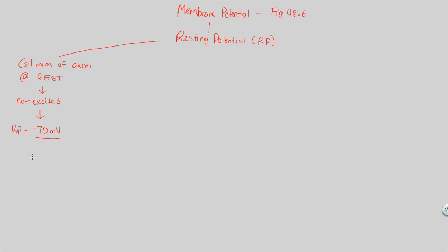Why is it negative and not positive? Because the inside is more negative than the outside. Whenever we talk about a membrane potential, we are referring to the outside — remember our reference electrode — and then comparing that to the inside. The inside will always be very negative. Why is this the norm at negative 70mV and not zero? That's highlighted by understanding how resting potential becomes the normal state.